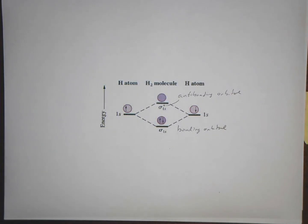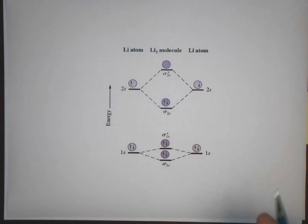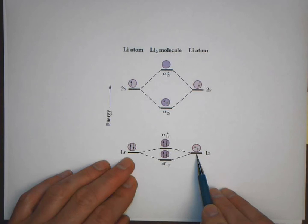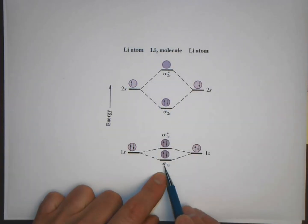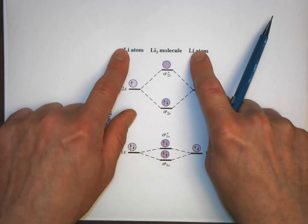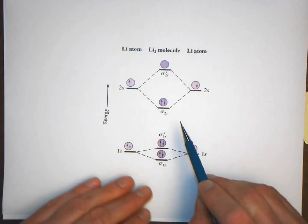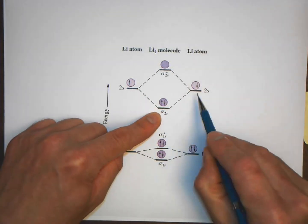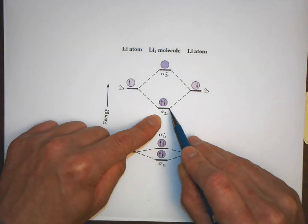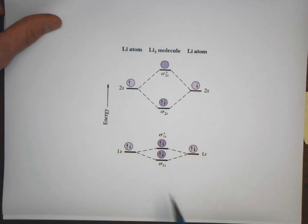We can do this with other atoms too. For the lithium atom, which has three electrons, the Li₂ molecule has electrons in the 1s bonding orbital and the 1s anti-bonding orbital, and there's another electron in each of the 2s orbitals. Combining those 2s orbitals gives us the sigma 2s bonding orbital, which is lower in energy, with two electrons in it. This molecule is diamagnetic because there are no unpaired electrons.